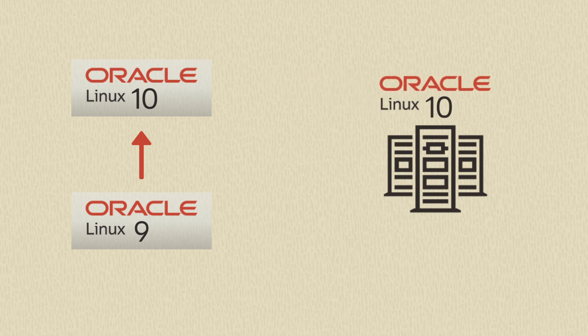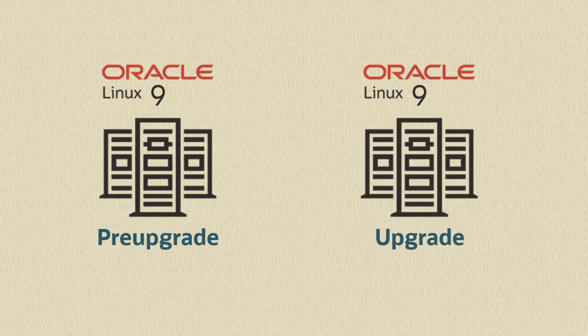The Leap utility is used to upgrade operating systems only. Each version of Oracle Linux has its own version of the Leap utility package. The process is defined in two stages: a pre-upgrade stage which verifies if the system is ready to be upgraded, and the upgrade stage which performs the system upgrade.